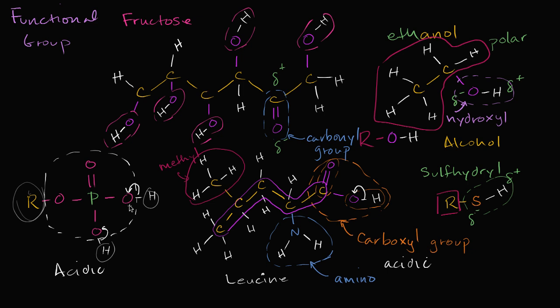So this is just an overview of a lot of the functional groups you'll see throughout biology. When you look at big, complex molecules and break them down, you can say: there's a hydrocarbon chain, there's a sugar with a bunch of hydroxyls and a carbonyl group, there's an amino group, a carboxyl group. You can think about whether it's going to be acidic, whether it's polar, or whether different parts of the molecule have different functions.